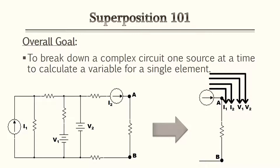The overall goal of superposition is to break down a complex circuit one source at a time to calculate a variable for a single element. The illustration below displays a complex circuit where we're trying to find the total current flowing between points A and B by adding every single current through that one leg, calculating one source at a time.